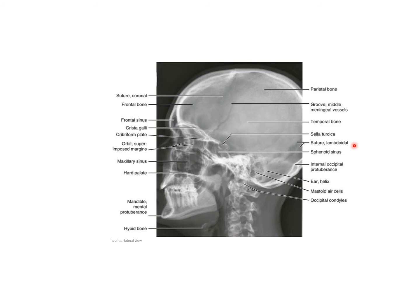This is another x-ray of the skull lateral view. Here you can see the maxillary sinus, the frontal sinus, and the orbit. Also the internal occipital protuberance, the sella turcica, and the sphenoid sinus. Here you can clearly see the groove for the middle meningeal vessels. The middle meningeal artery is a branch of the first part of the maxillary artery, with frontal and parietal branches.